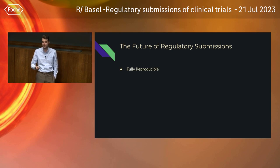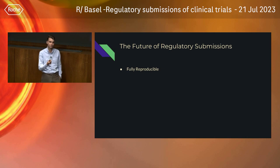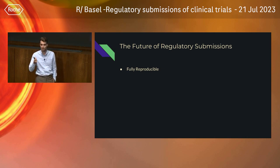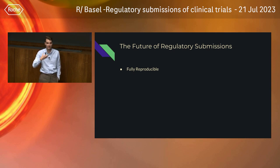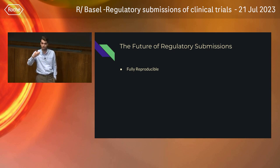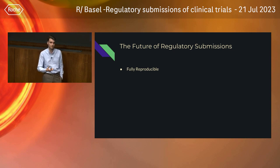The first one: whatever you submit to a health authority to get a drug approved that affects the life of people with a disease, the analysis should be fully reproducible. That means any code you submit for any analysis dataset, any table, any statistical model you fit, you need to be able to have the person on the other side reproduce exactly what you submitted.